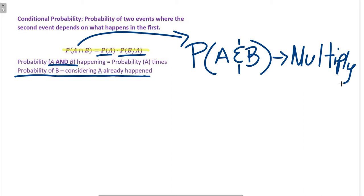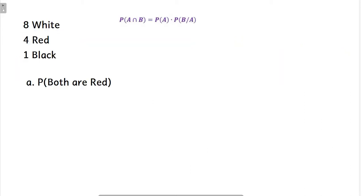Let's get into this. We have eight white, four red, one black. The probability that both are red. What I want to do is first make the probability of both things. So probability of A happening. We have eight plus four, that's 12, plus one, we have 13 total.